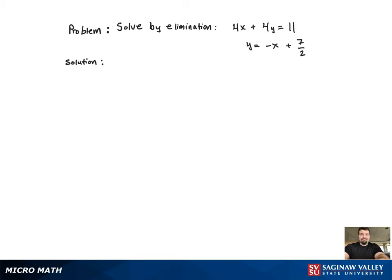The objective of the elimination method is to try and eliminate one of the variables. To start, I'm going to take the second equation and multiply both sides of the equation by negative 4.